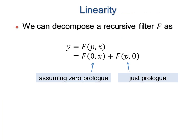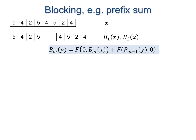A key observation is that the filter output can be decomposed into two parts, one assuming a zero prologue, and the other assuming a zero input vector. Let's apply this decomposition to a block-based computation of the prefix sum. Assume we already have the output of the previous block. Its last element is the prologue for the current block.